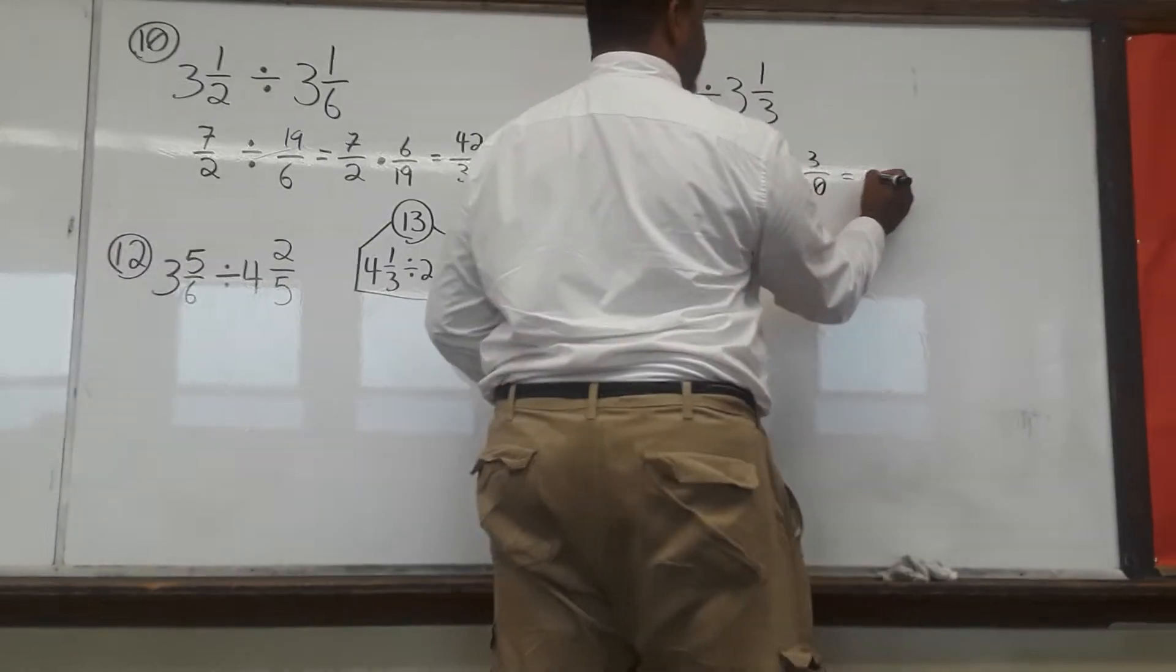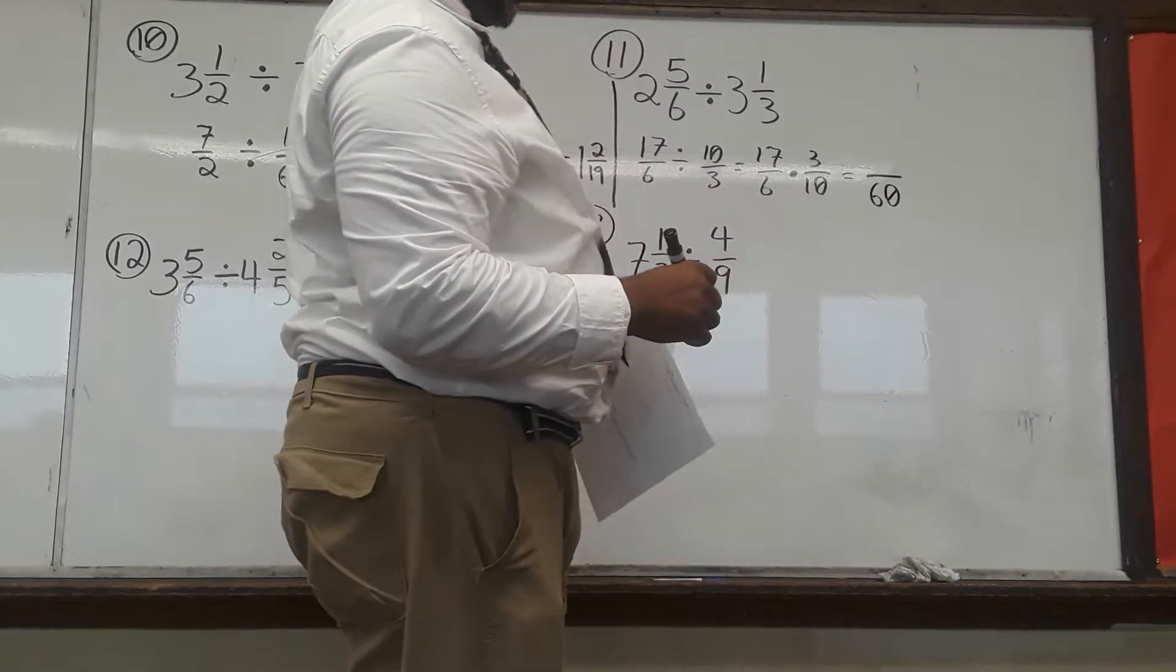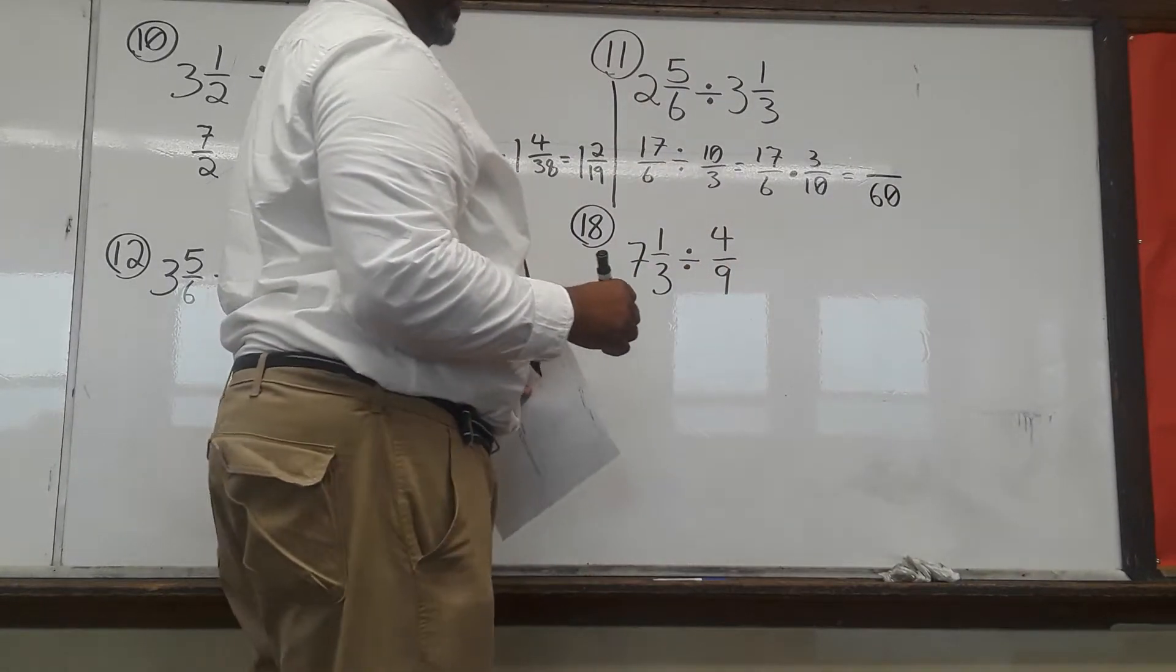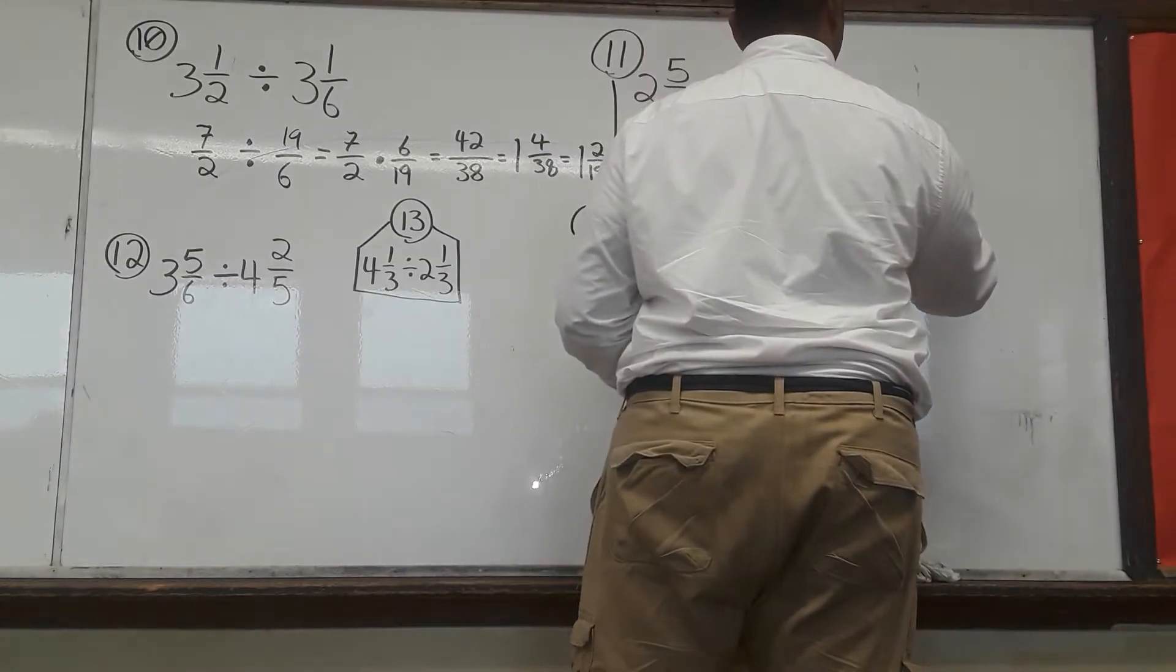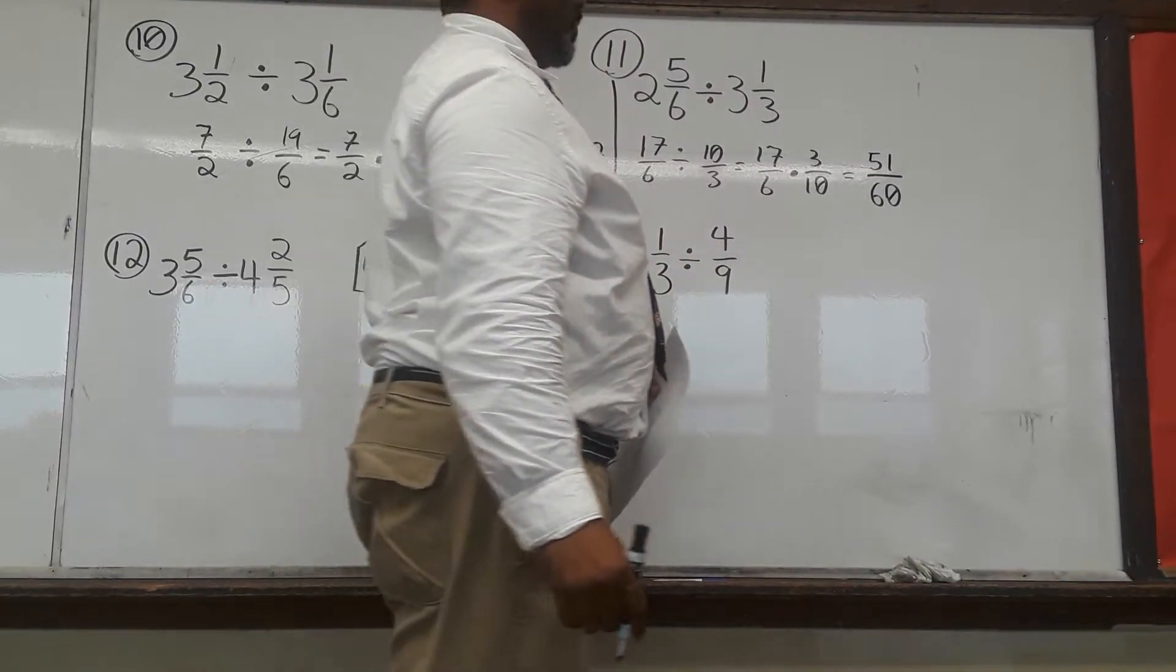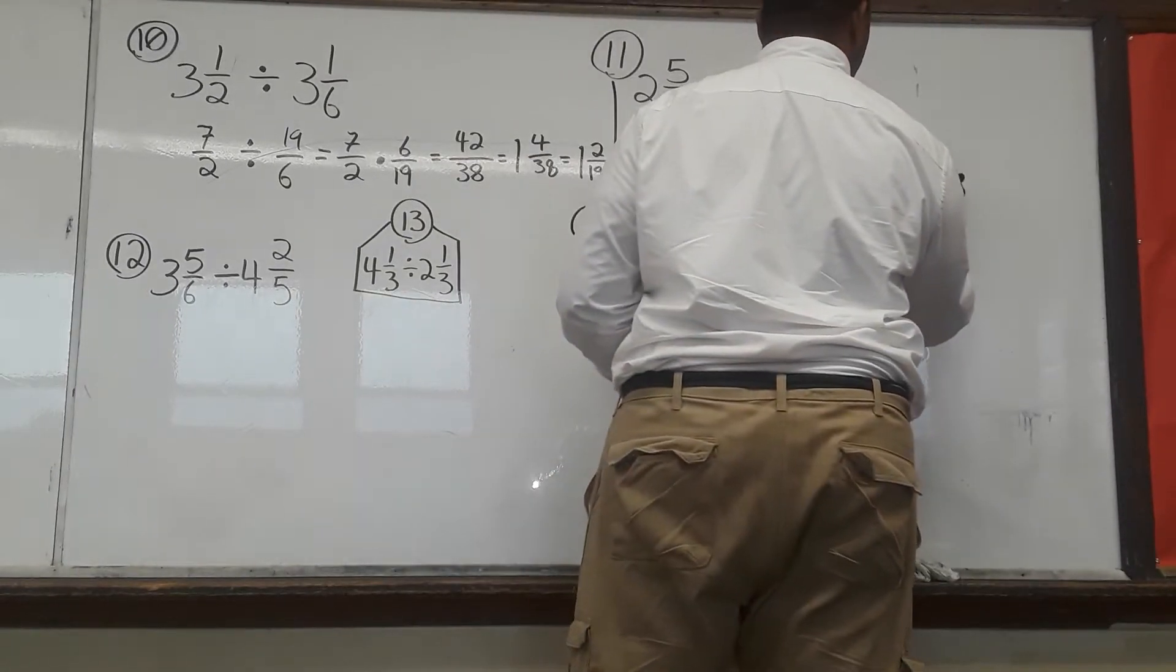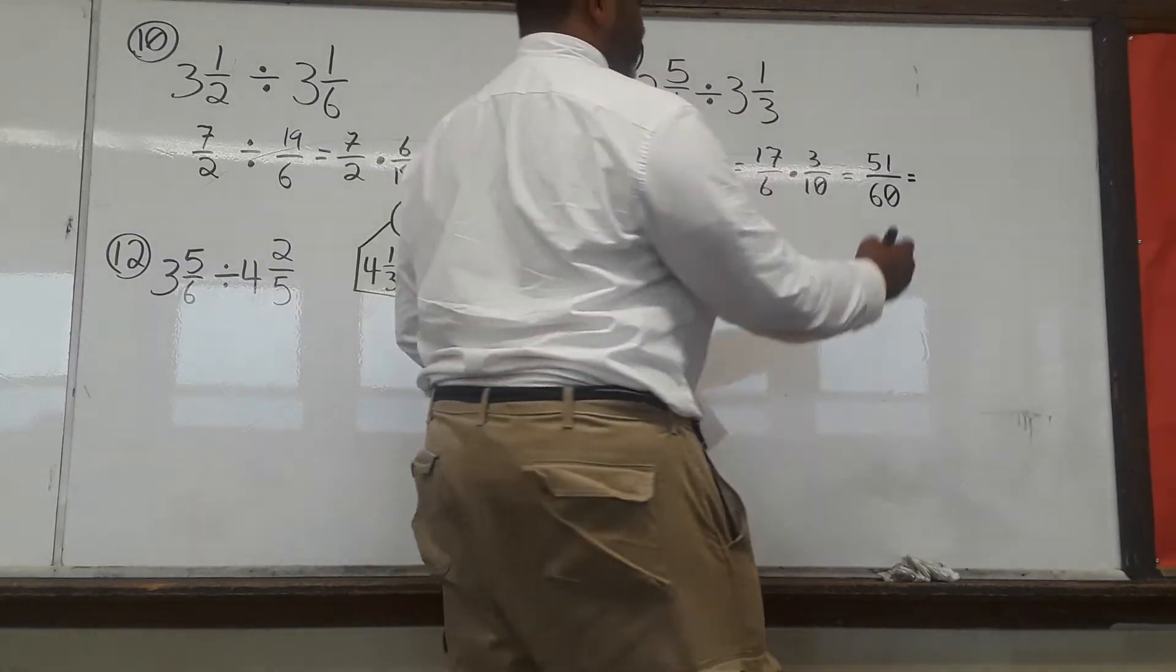6 times 10 is very easily 60. That's 17 times 3. That takes a little bit more work. I'm going to do 20 times 3, which is 60. Minus 9 gives me 51. 51 over 60. Both of those numbers are divisible by 3. So, let's see. 60 divided by 3 leaves me with 20.